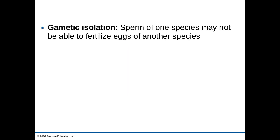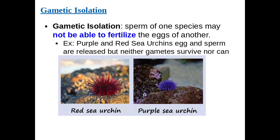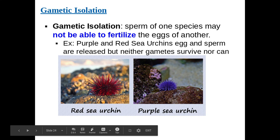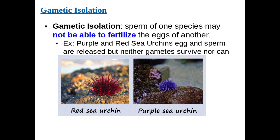Gametic isolation is when the sperm of one species can't fertilize the eggs of another species. These two species may be able to have intercourse, but fertilization still doesn't occur — we never get a zygote because the sperm aren't able to fertilize those eggs. For example, purple and red sea urchins can release egg and sperm that may interact, but neither gamete can survive in the other's environment.